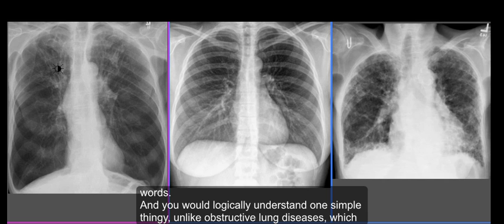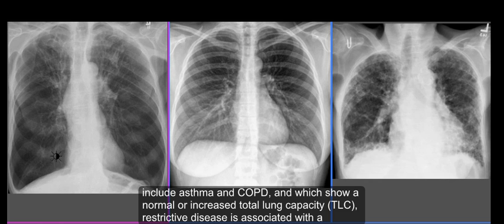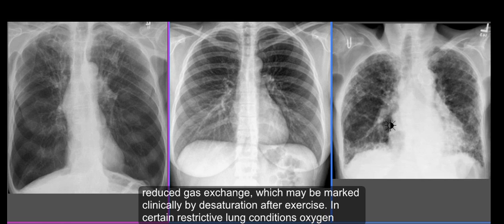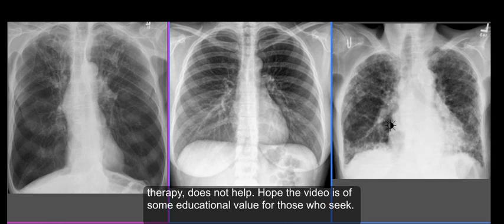Unlike obstructive lung diseases — which include asthma and COPD among many others, and which show a normal or increased total lung capacity — restrictive lung disease is associated with decreased total lung capacity. Restrictive lung disease can also be caused by obesity, but if caused by parenchymal lung disease it is accompanied by reduced gas exchange, which may be marked clinically by desaturation after exercise. In certain restrictive lung conditions, oxygen therapy does not help.